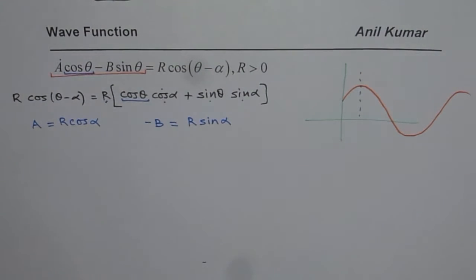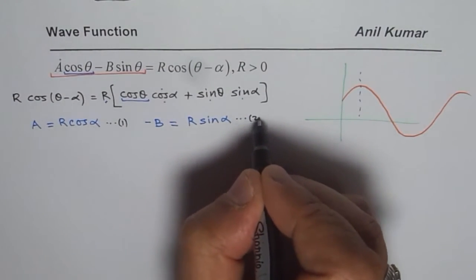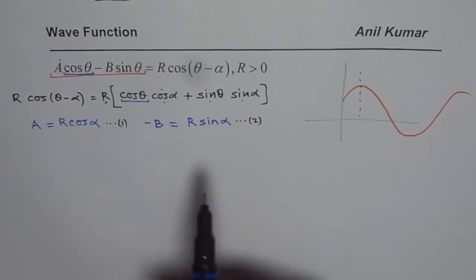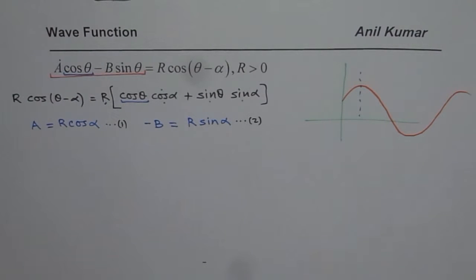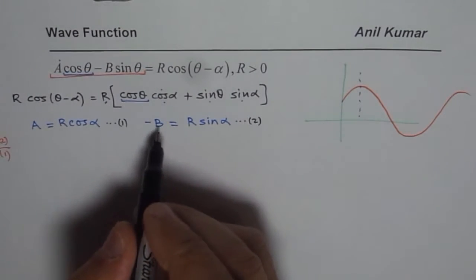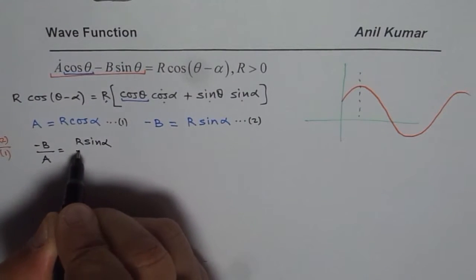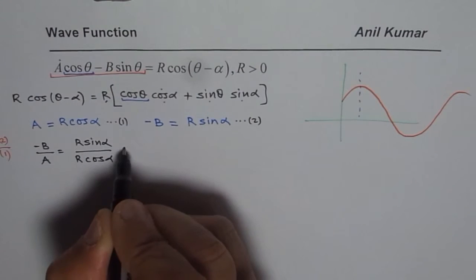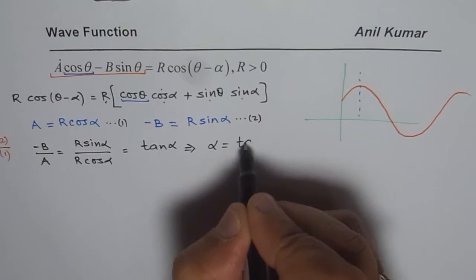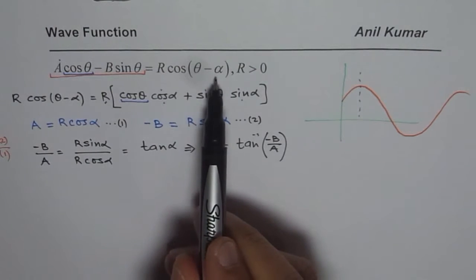So straight away we get two different equations. Let me name these equations as 1 and 2. Now to get the value of R and to get the value of α, these are two variables for us. If we divide equation 2 by equation 1, we get minus B over A equals R sin α divided by R cos α. R's cancel out, we get tan α. So from here we can find what α is. That gives us α equals tan inverse of minus B by A.